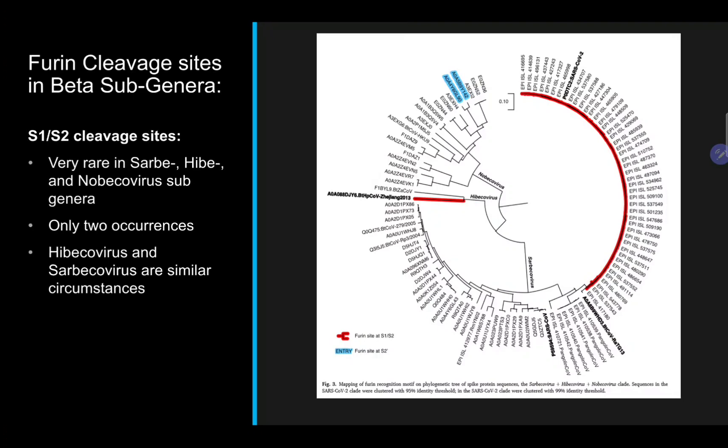Here is another similar figure, figure three, that I also suggest viewing directly in the article. The figure isolates the Sarbecovirus, Nobecovirus, Hebecovirus subgenera, and again highlights the viruses containing the S1/S2 furin cleavage sites in red and the S2 prime in blue. Importantly, the long string of red virus prefixed with EPI-ISL are collected SARS-CoV-2 sequences, not dozens of different viruses.